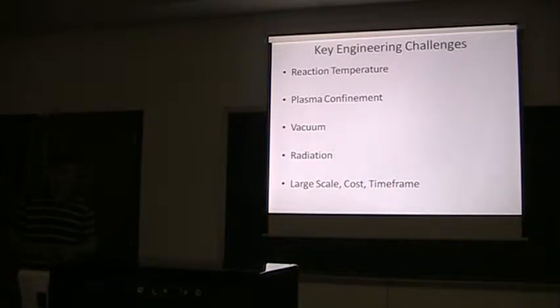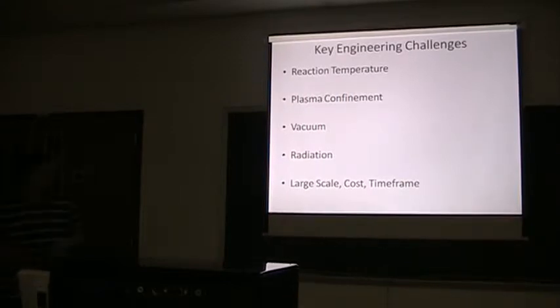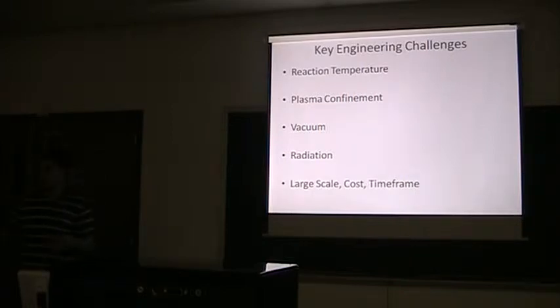So far the main engineering challenges preventing this process from being used as a power source are: First is the reaction temperature. You need temperatures of 100 million to 200 million degrees Celsius to fuse atoms together, which creates plasma. Once you have this plasma, you have to confine it so that you can absorb the energy from it. You can't confine the plasma with solid materials, so you need a vacuum to surround and confine the plasma. Also, the high neutron flux released from these reactions would possibly destroy the materials we know of and create long-term radioactive waste from the plant itself. So far all the projects have been very large-scale with very long time frames.